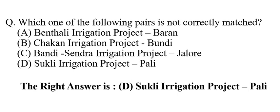Today's question is: which one of the following pairs is not correctly matched? a. Benthili Irrigation Project – Bara. b. Chakan Irrigation Project – Bundi. c. Bandi Sendhara Irrigation Project – Jhalor.